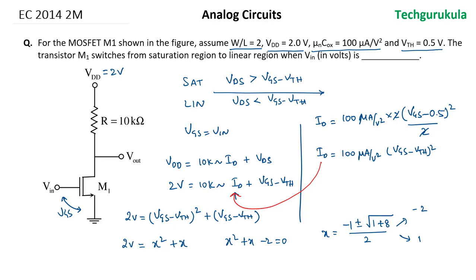We know x is equal to VGS minus VTH. Obviously this value cannot be negative because we are talking about a situation where the transistor is right in between saturation and linear, at which the transistor should be on, which means VGS should be greater than VTH. Hence the right value we have to take is 1.